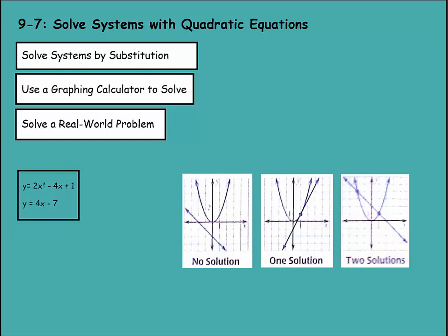We're on Lesson 7 of Chapter 9, where we're going to solve systems with quadratic equations. First, we're going to solve systems by substitution. Then we're going to use a graphing calculator to solve. Then we'll solve a real-world problem.